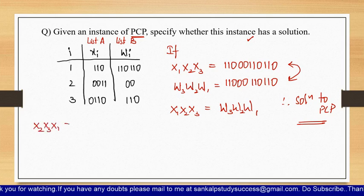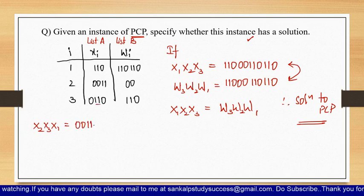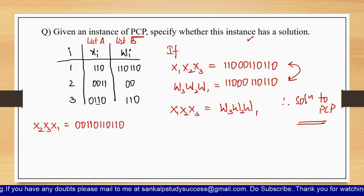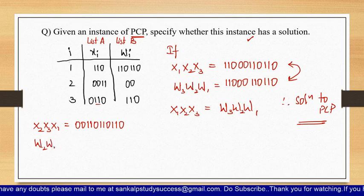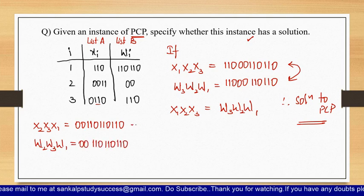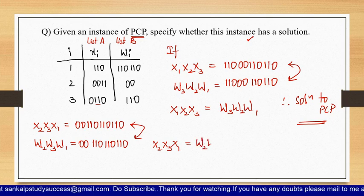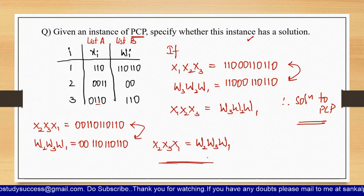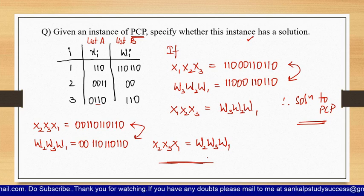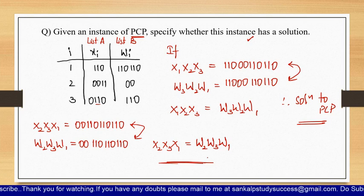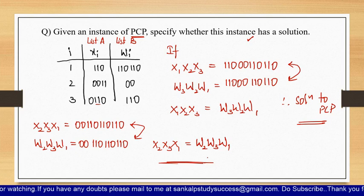There can be multiple solutions. For example, combining x2·x3·x1 gives '0011' + '0110' + '110', and taking w2·w3·w1 gives the same string — so x2·x3·x1 equals w2·w3·w1, which is another solution. If the combination of list A equals the combination of list B, that is a solution for PCP. If not, there is no solution.